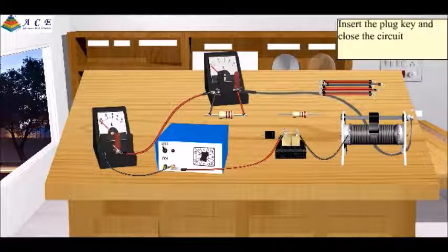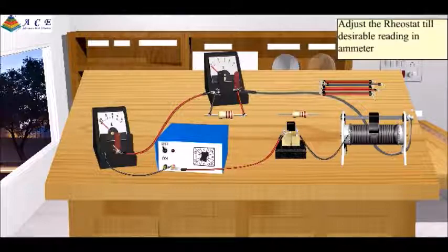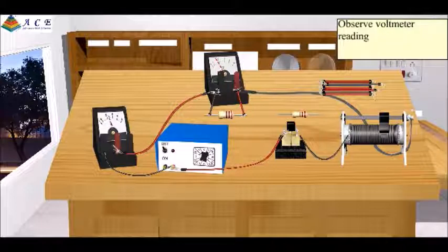Insert the plug key and close the circuit. Adjust the rheostat till the desirable reading in the ammeter. Observe the voltmeter reading.